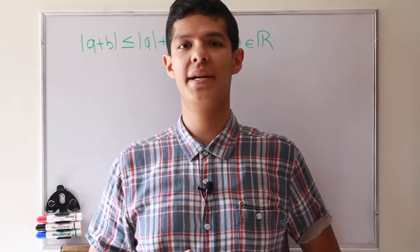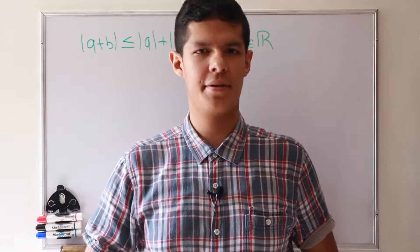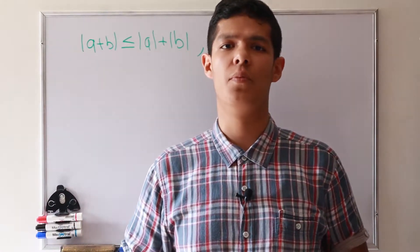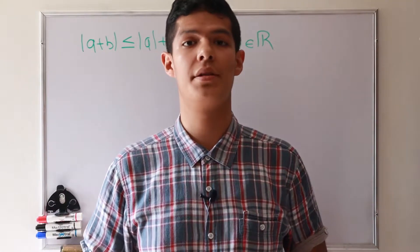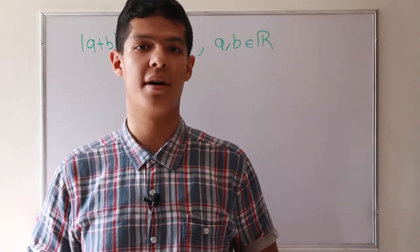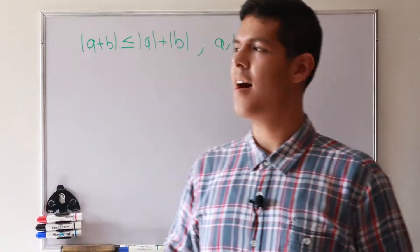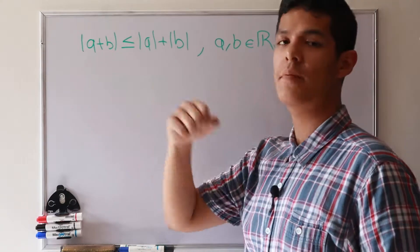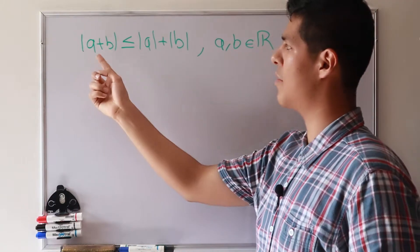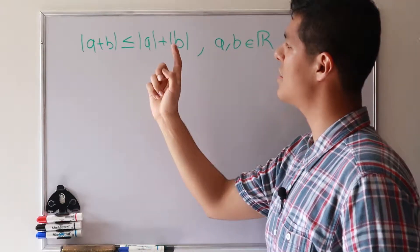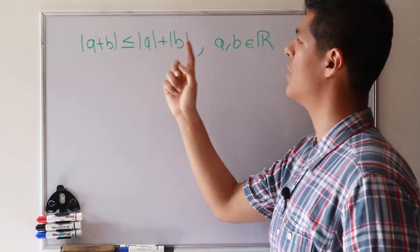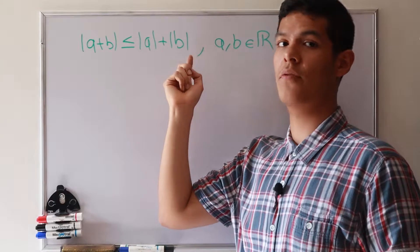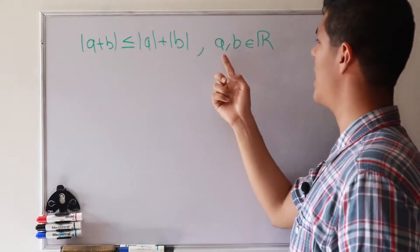Hi guys, welcome to my channel Math ABC English. Today we want to see one way to prove the triangle inequality. The triangle inequality says: the absolute value of a plus b is less than or equal to the absolute value of a plus the absolute value of b.